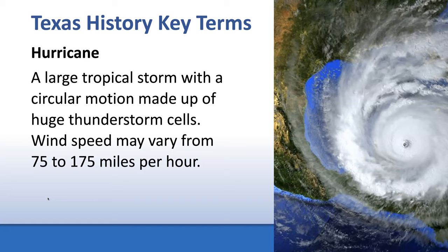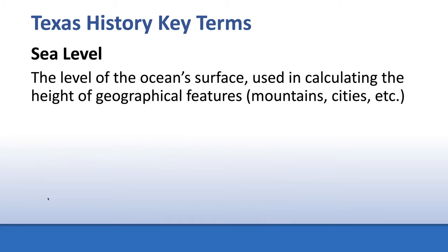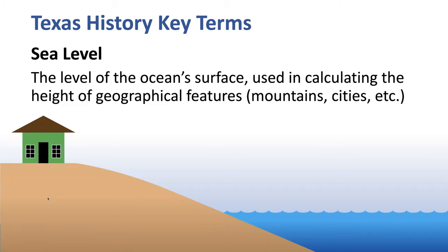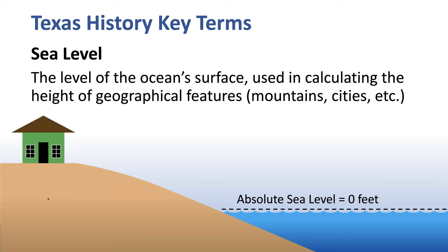Another key term is sea level. Sea level is the level of the ocean's surface, and it is used to calculate the height of geographical features such as mountains and cities. At the beach, wherever the water washes up on shore — that level is sea level, also called absolute sea level, measured as zero feet above sea level.